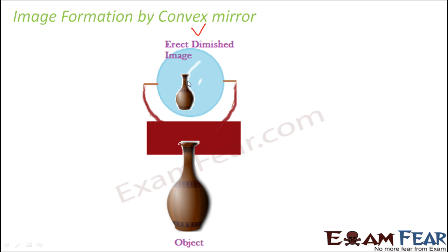The image is virtual because it is formed on the other side of the mirror. A convex mirror is used in all those places where we need a diminished image — an image smaller in size compared to the object. For a convex mirror, it doesn't matter where the object is located; every time it will give an erect and diminished image.